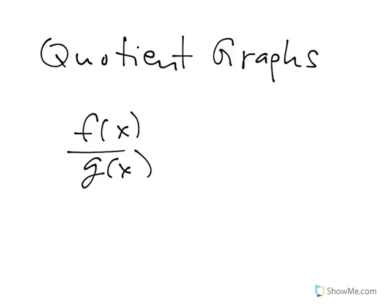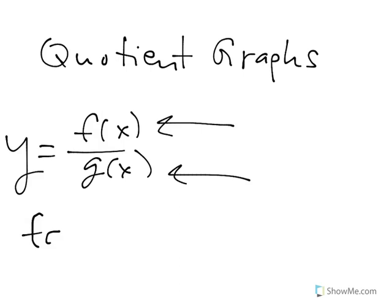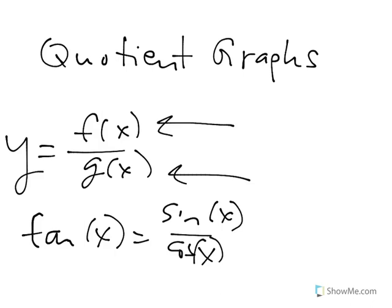If you have two graphs, or two functions, f of x and g of x, I want to show you how you can determine what the graph of the quotient looks like. It's going to be important because it enables us to graph tan x, which equals sine x over cosine x, and also cotangent x, which is cosine x over sine x.